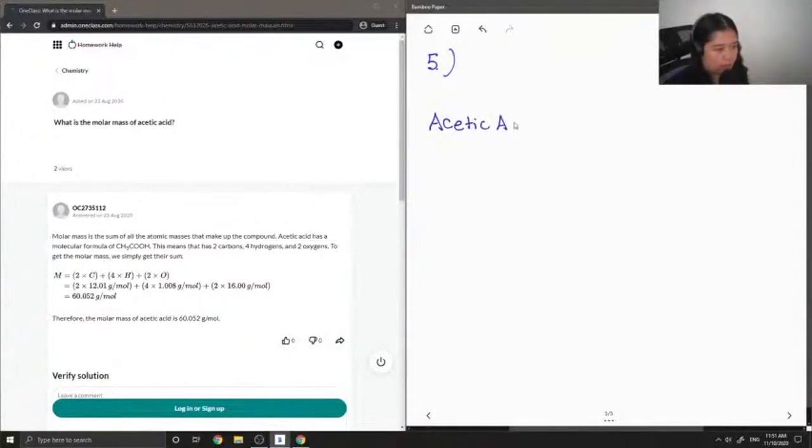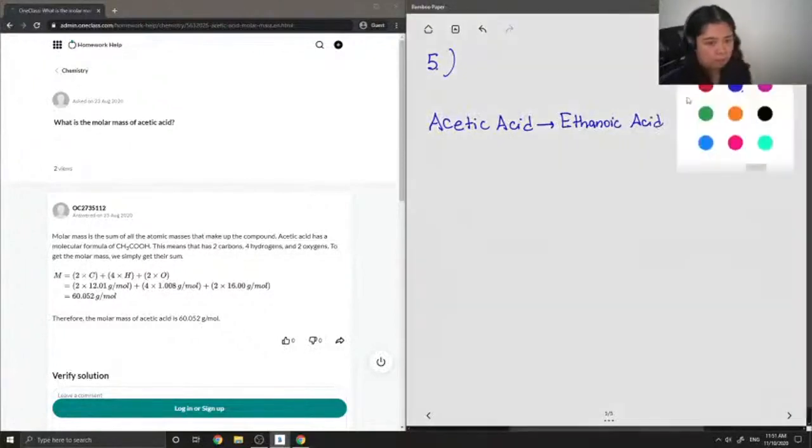Acetic acid can also go by the name ethanoic acid. If we try to analyze the name ethanoic acid, the prefix has eth, so we know that there are two carbons involved.